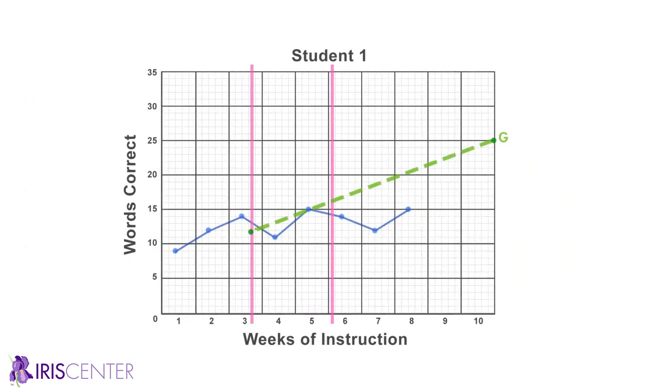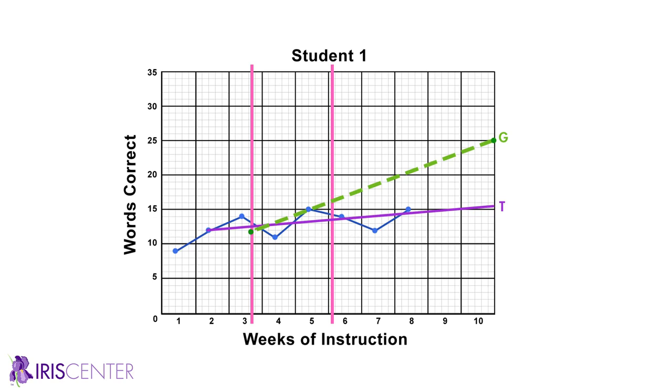Looking back at our example, we see that the student's trend line is flatter than the goal line. The educator will implement a different instructional approach and monitor the student's progress to determine if this approach is effective.